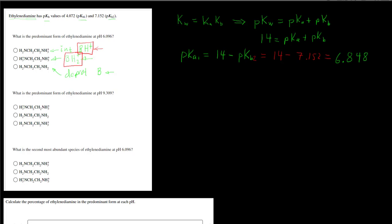For pKA2, we can do the same kind of thing. It's going to be 14 minus the pKB1. So that's 14 minus pKB1, which is 4.072, and that's going to give us 9.928.